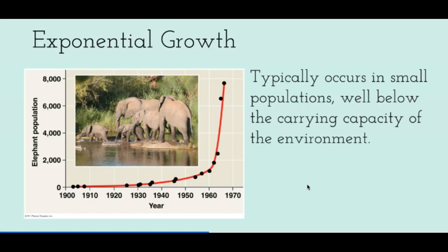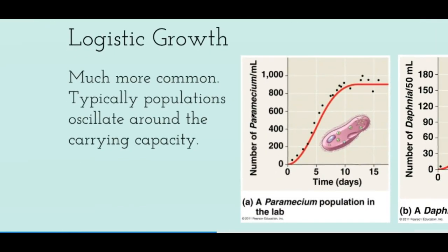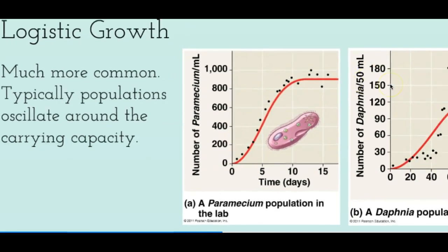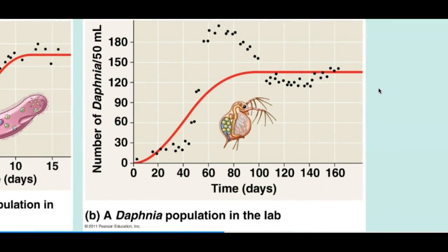Here are two examples of actual exponential and logistic growth in real populations. The first is an elephant population showing exponential growth — it grows slowly at first and then increases rapidly, never reaching a plateau because the population size is far below the carrying capacity. For logistic growth, a paramecium population grows very quickly at the beginning and then plateaus. Similarly, daphnia (water flea) shows very fast growth at the beginning that slows and plateaus — this is logistic population growth.